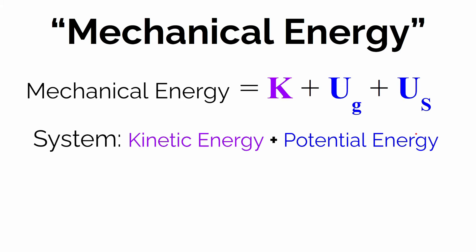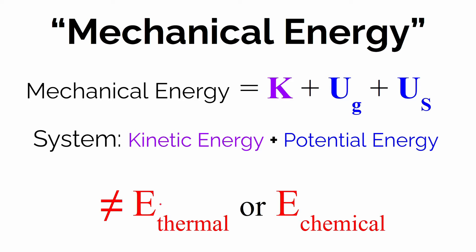Mechanical energy is defined as the sum of the kinetic energy and the potential energy stored by a system. In physics, we talk about kinetic energy — the energy of motion — and there are two different types of potential energies: gravitational potential energy and spring potential energy. So it's just the sum of those three energy storage accounts. What this doesn't include would be thermal energy or chemical energy.